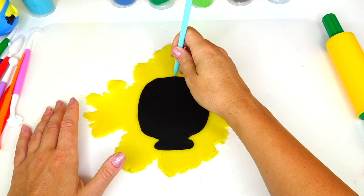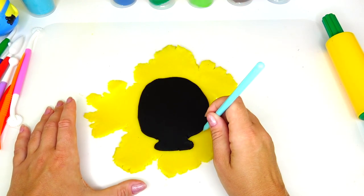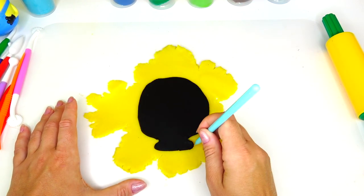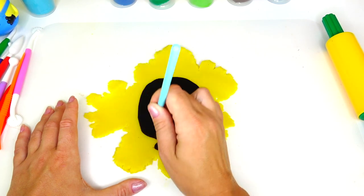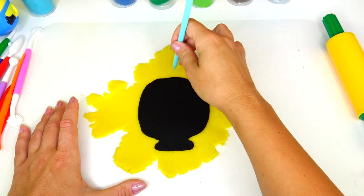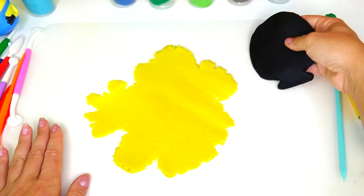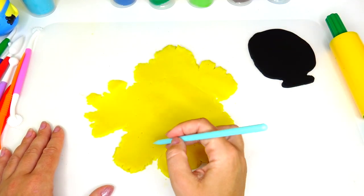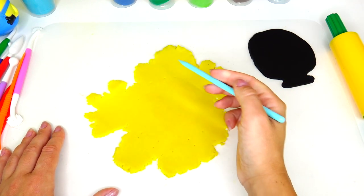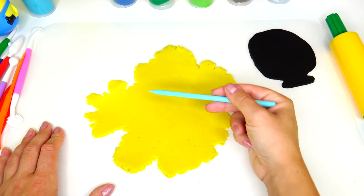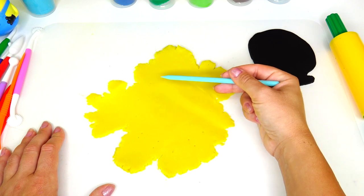Next I'm taking this pointy tool and just slightly outlining the shape of the black base. Carefully removing the black base and putting it aside again. Now it gives me the idea what the black shape is while I'm cutting out the yellow shape.